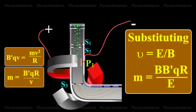Substituting V is equal to E by B, M is equal to BB'QR divided by E.